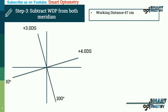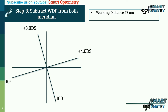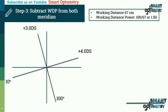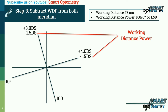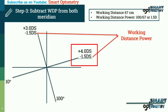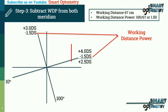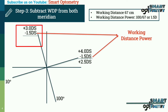Now we have to subtract working distance power from both meridians. Suppose our working distance was 67 centimeters. Then the working distance power will be 100 divided by 67, or 1.5 diopters. So we subtract 1.5 diopters from both meridians. In this meridian, the final power will be plus 4 minus 1.5, or plus 2.5. And in this meridian, the final power will be plus 3 minus 1.5, or plus 1.5.